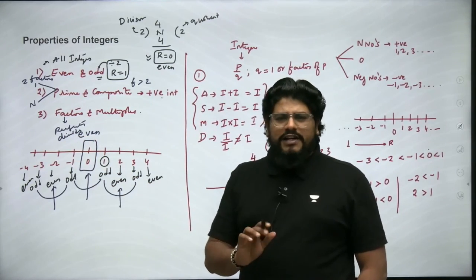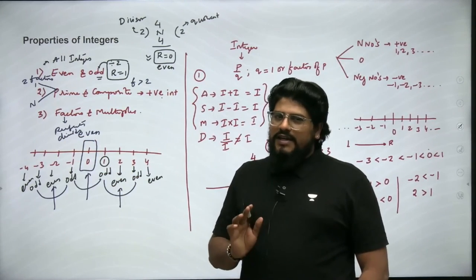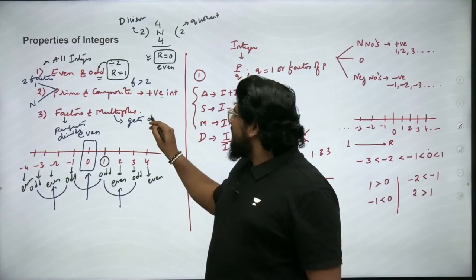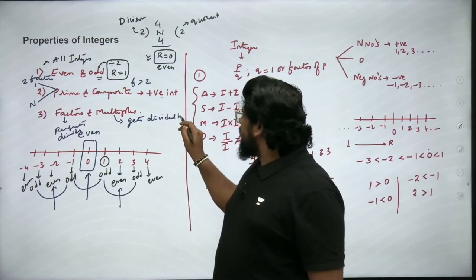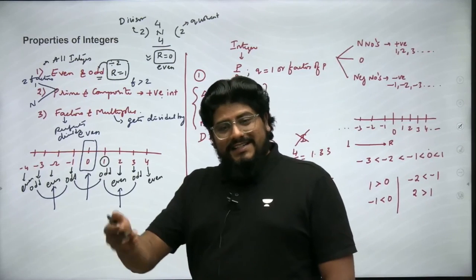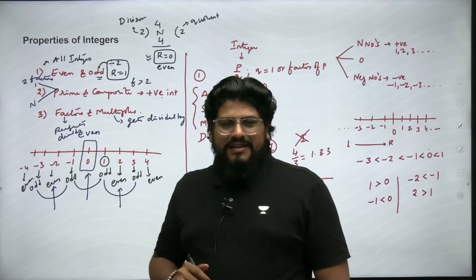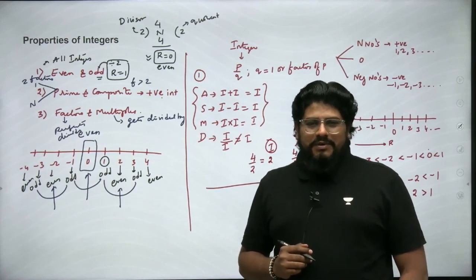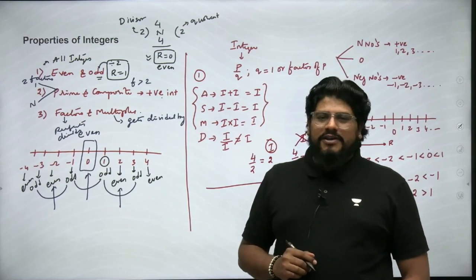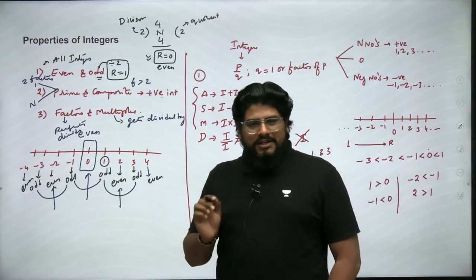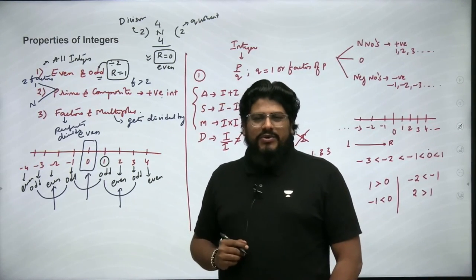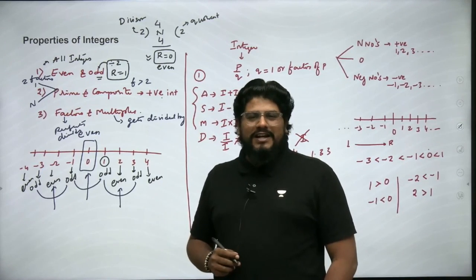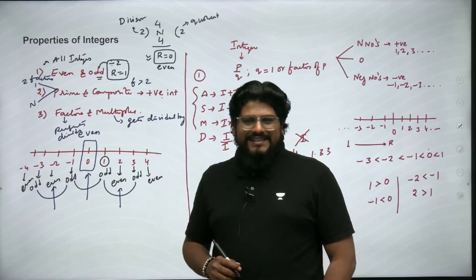A factor is a number which perfectly divides a given number. A multiple is a number which gets perfectly divided by another — that number which divides is the factor. That covers the properties of integers. In the next video, we will go in detail about even and odd, prime and composite, and factors and multiples. Stay tuned, subscribe to AN Academy CLAT channel, and let's focus on CLAT 2024. See you in the next session!